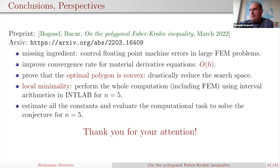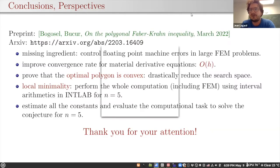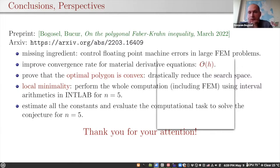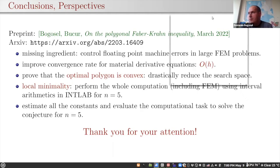Thanks a lot for this talk. It is now time for questions. There was a question from Lodfi Hermy in the chat asking if there is a version of the Saint-Venant polyisoperimetric inequality for polygonal domains. Dorin answered that to his knowledge it is open. Do you have more to say about that? Well, it's an open question. In a way it is a bit simpler than this inequality, and you could apply the same strategy to this problem, but we did not go into detail.